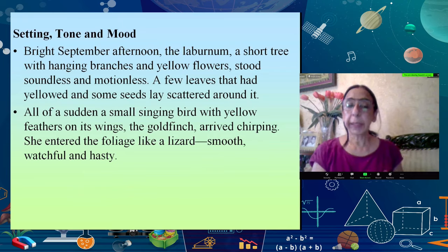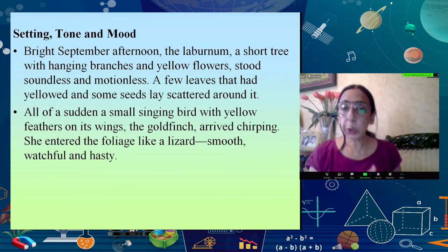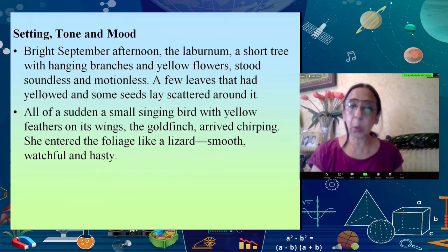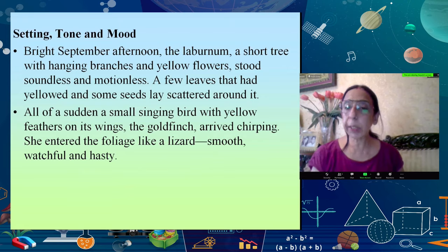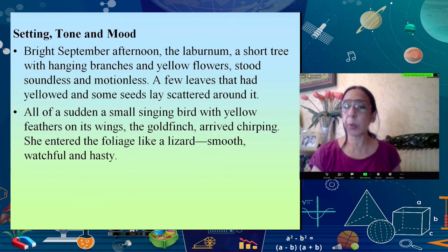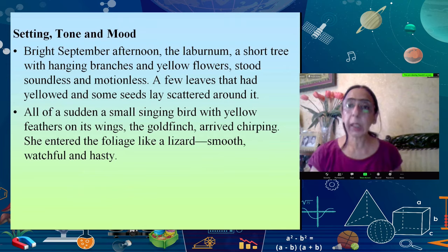The tone and mood will change three times. Initially it is still, quiet, pensive, and thoughtful. Then suddenly the bird comes in and the whole tree livens up with twittering, chittering, chattering — onomatopoeic words — as if it's coming alive. Then when the goldfinch leaves the tree, it subsides into the still quietness that it began with. We have the setting and the tone and mood which changes three times.